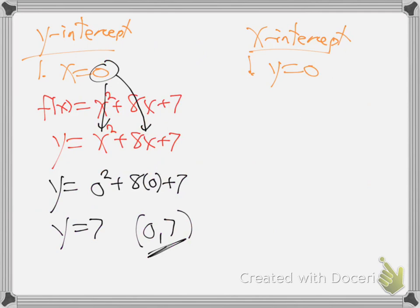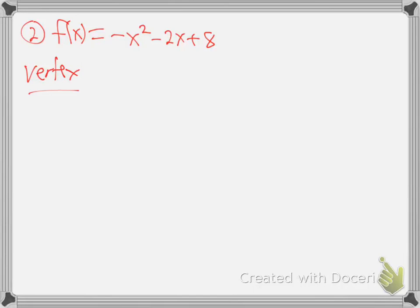Let's try one. Let's find the vertex, which means the center. How do we do it? What formula am I going to use? Start with x - x equals negative b over 2a. It's the beginning of the quadratic formula. So a is negative 1, and b is negative 2. We okay with that?